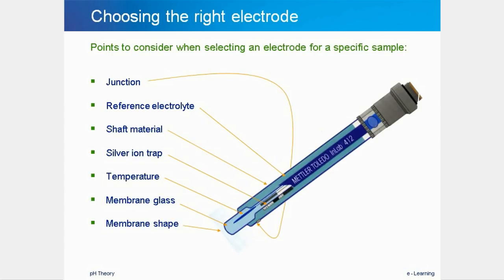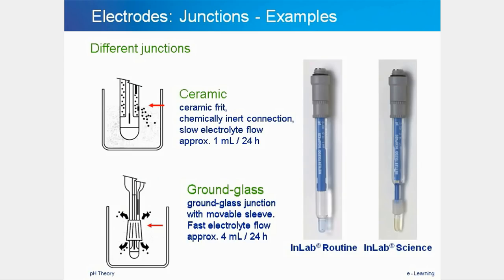Mettler Toledo manufactures many different pH, reference and combined pH electrodes. Different samples need different electrode properties for the quickest and best results. The important factors are the shape of the membrane glass, whether a temperature sensor is present, which reference system is in the electrode, and the material of the outer shaft which will be in contact with the sample. Also of interest are the reference electrolyte solution and the junction or diaphragm through which the reference electrolyte flows out into the solution.